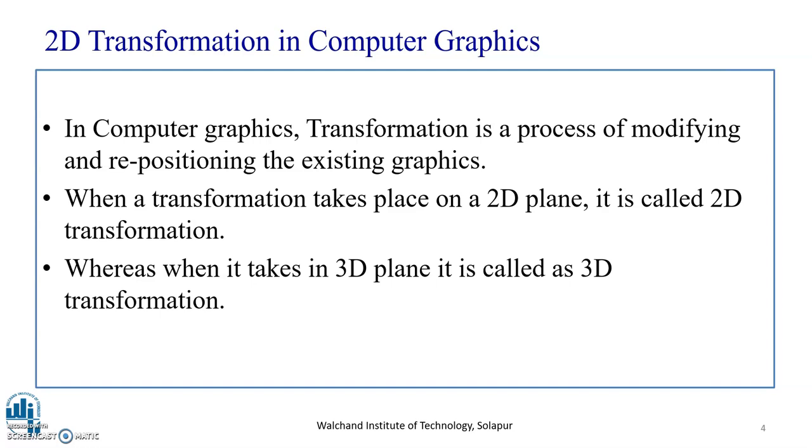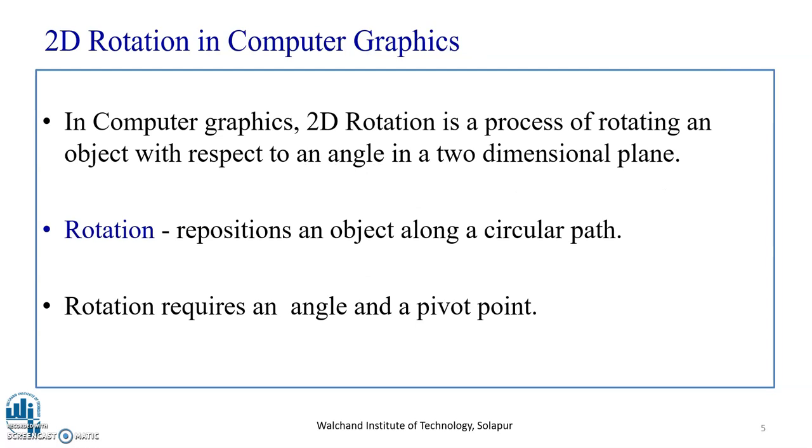What are these basically? Transformations are actually a process of modifying and repositioning the existing graphics. When the transformation takes place on a two-dimensional plane, it is called 2D Transformation, whereas when it takes place in three-dimensional plane, it is called three-dimensional transformation. In this video lecture, I will be focusing on two-dimensional rotation in Computer Graphics.